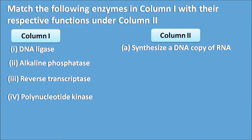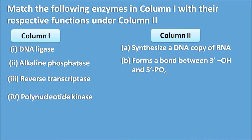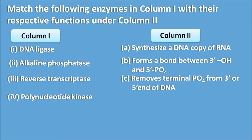Column 2: A) Synthesizes a DNA copy of RNA. B) Forms a bond between the 3-hydroxyl group and 5-phosphate group. C) Removes terminal phosphate from the 3- or 5-end of the DNA. D) Adds phosphate to the 5-OH end.